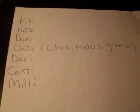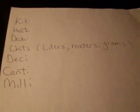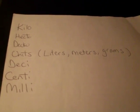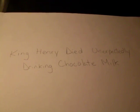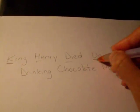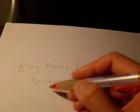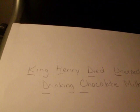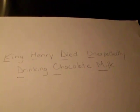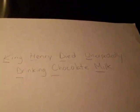And then deci, centi, and milli. There is an analogy that can help you remember the order and how to move your decimal points over: King Henry died unexpectedly drinking chocolate milk. The K stands for kilo, H for hecto, D for deca, U stands for the units, D for deci, C for centi, and M for milli.